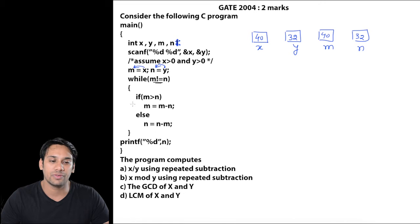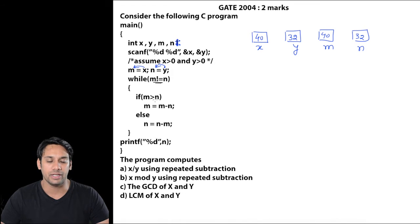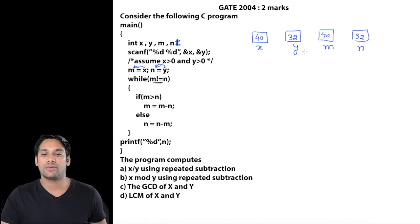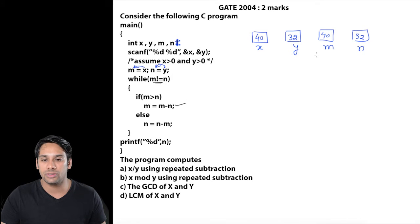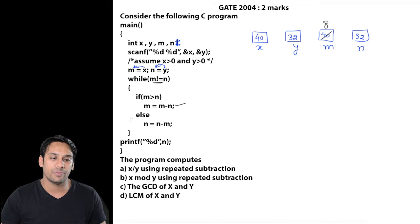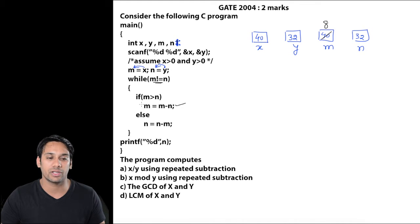Now in this while loop we are having an if-else statement. The if statement is: if m is greater than n. The value of m is 40 and the value of n is 32, obviously 40 is greater than 32, so we are going to do m equals m minus n. So the value now stored in m is 40 minus 32 which is 8. Now again we check the while loop: the value of m is not equal to n because 8 is not equal to 32, therefore we will come inside again.